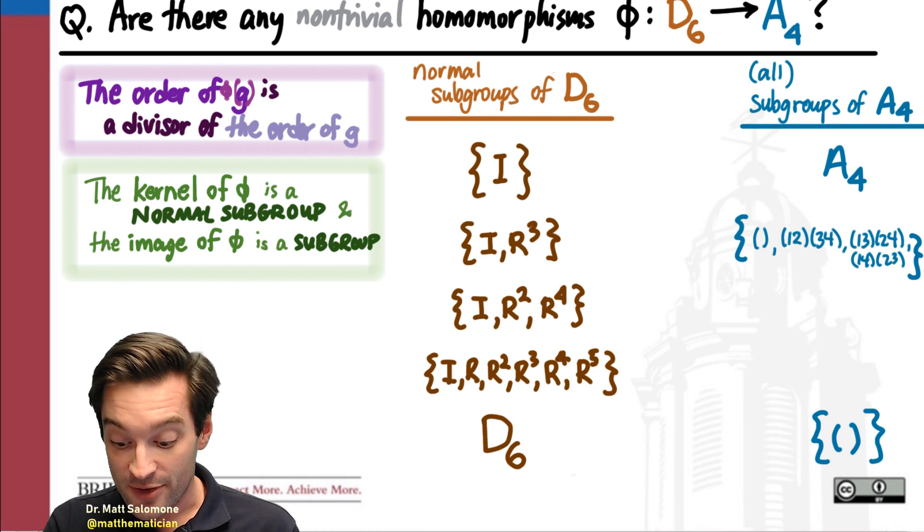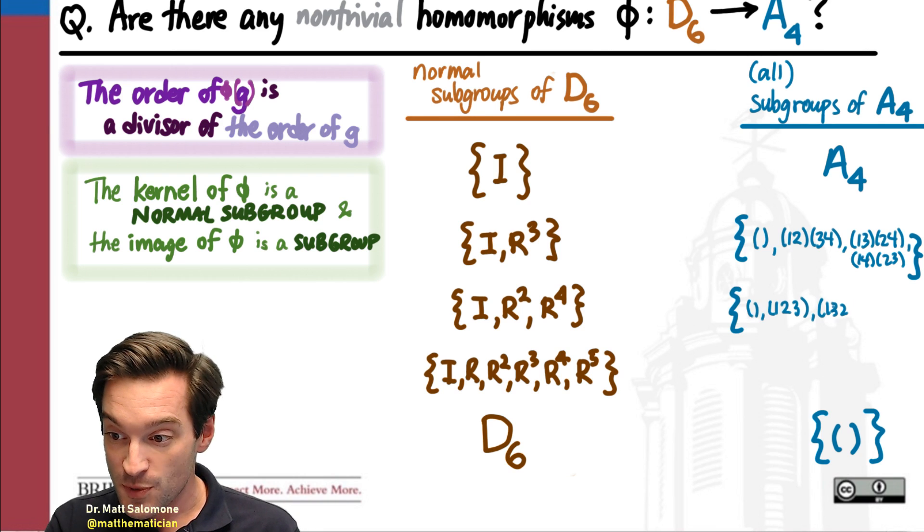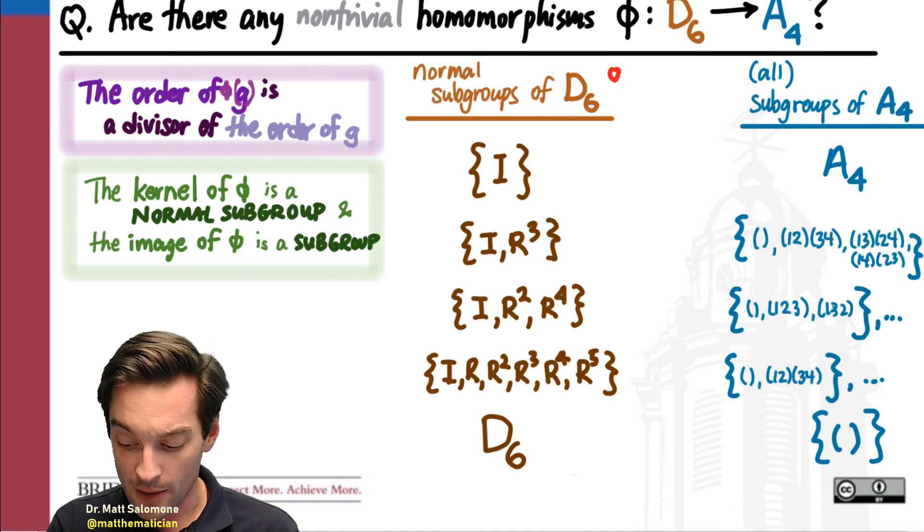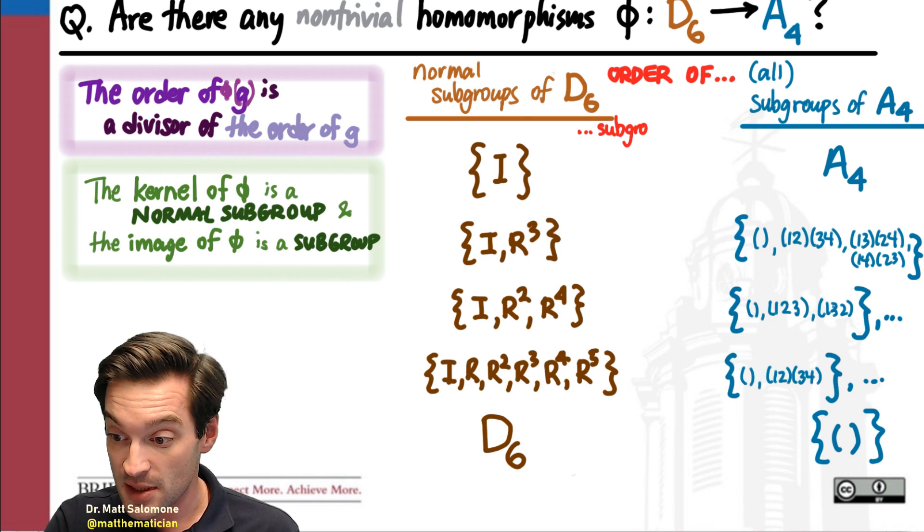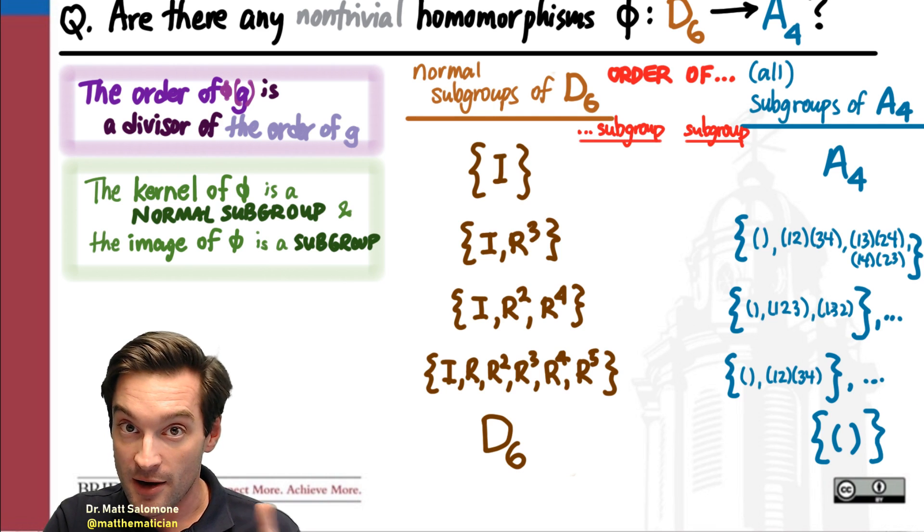So now that I have this list, we want to figure out which ones of these can be kernels, which ones of these can be images. And we'll come back in our next video and take a look at how to continue this thought process.